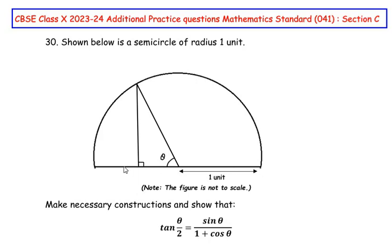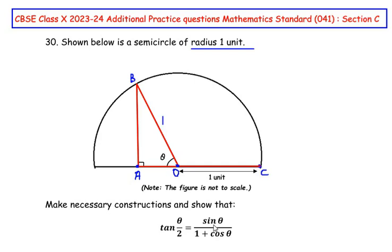We can see that a semicircle has been given with radius 1 unit, and there is a right-angled triangle within the given semicircle. I have highlighted this triangle and labeled it ABO, where θ is the angle at point O. OC is the radius, and OB is also a radius since it is drawn from the center of the circle. So if OC is 1 unit, OB is also 1 unit. Now let us focus on sinθ and cosθ in this triangle, since the expression involves both.